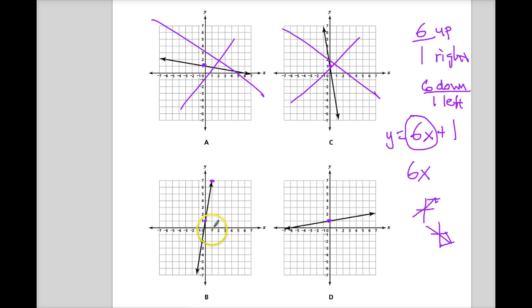But 6 down, 1 left, 1, 2, 3, 4, 5, 6 and over 1. And look, there it is. So the answer to this one is B.